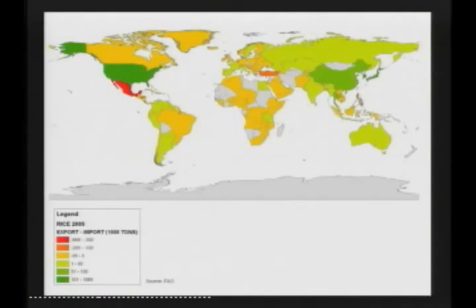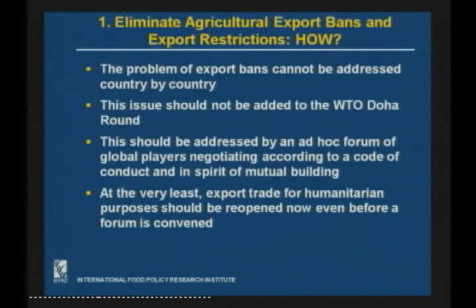Of course, some countries both export and import. But if you look at exports minus imports, the picture is even worse — you have fewer countries that share most of the net exports in the world. So any change in trade barriers in these countries will immediately affect prices. The problem is that export bans cannot be addressed country by country — they have to be addressed globally. But this cannot be added to the WTO. So what we are saying is that this should be addressed by an ad hoc forum of global players negotiating according to a code of conduct and in the spirit of mutual trust, involving the major exporting countries.